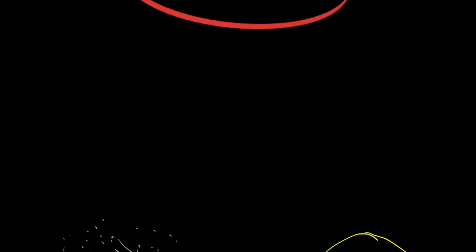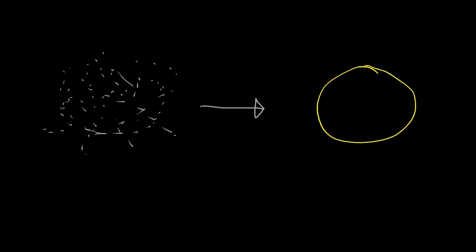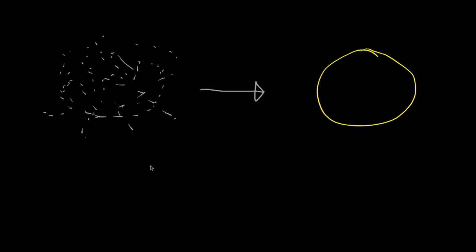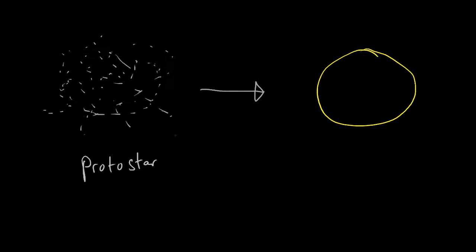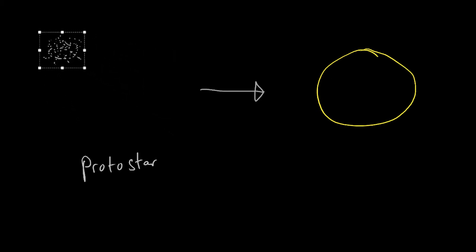Here we have a diagram: on the left-hand side, these gray dots represent dust. You've got lots of dust in outer space, and dust comes together based on its mass. If it has a really high mass, then forces of gravity pull all this dust together and it condenses into a dense load of gas — getting closer and closer together.